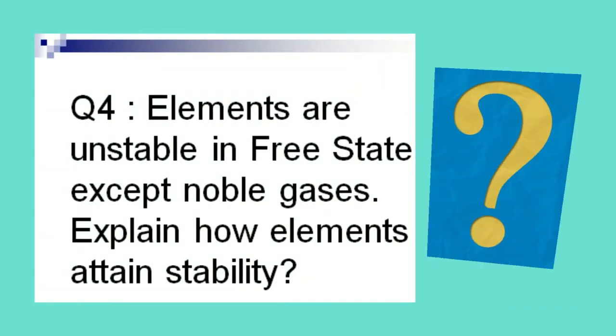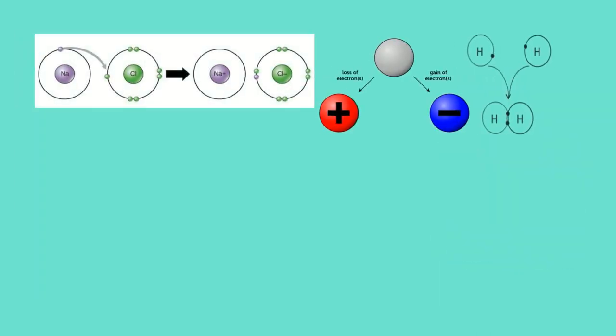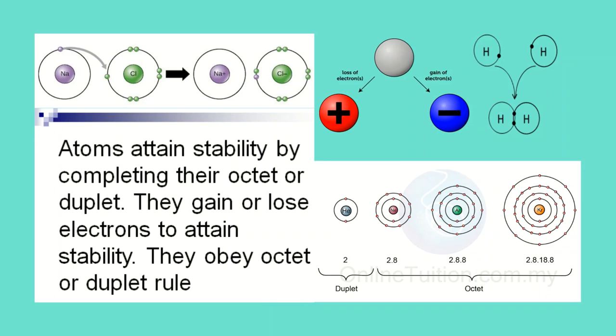Elements are unstable in free state except noble gases. Explain how elements attain stability. Atoms attain stability by completing their octet or duplet. They gain or lose electrons to attain stability. They obey the octet or duplet rule.